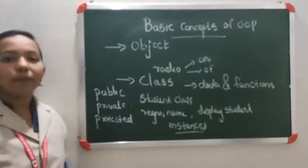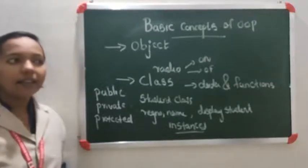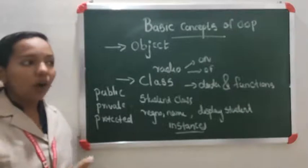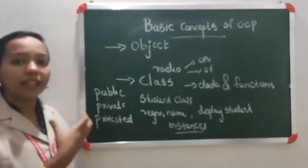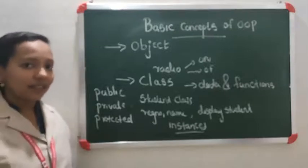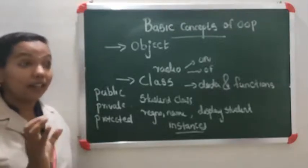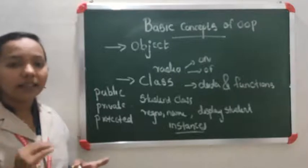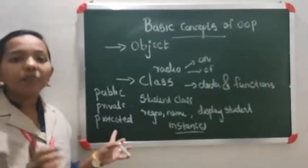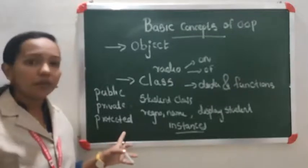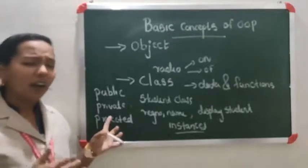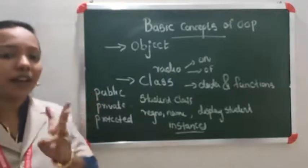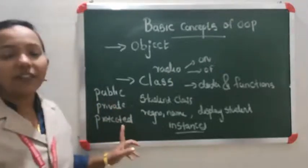In object-oriented concept, there is one more approach called inheritance — inheriting some of the properties from a base class to a derived class, or acquiring properties from one class to another class. We will discuss that in the next video. The 'protected' access specifier is used in inheritance. So only in inheritance do we use the protected access specifier; in others, we can use public and private.